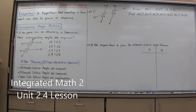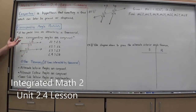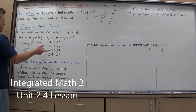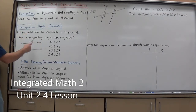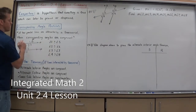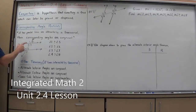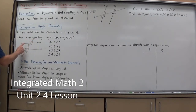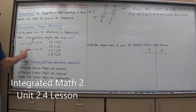This postulate states that those angles are congruent as long as the lines are parallel. If it's parallel lines cut by the transversal, make sure you know they're parallel before you assume they're congruent. So by the postulate: angle 1 is congruent to angle 5, angle 2 is congruent to angle 6, angle 3 is congruent to angle 7, and angle 4 is congruent to angle 8.